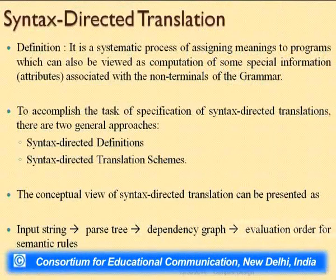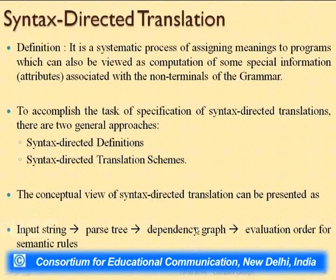To accomplish the specification of translations, we have two general approaches: syntax-directed definitions and syntax-directed translation schemes. The conceptual view of syntax-directed translation is: we have an input string, generate a parse tree, evaluate a dependency graph from it, and then evaluate the semantic rules. The grammar has semantic rules telling how meaning should come from a production. The order in which those rules should be evaluated — and hence the meaning — comes from the dependency graph.